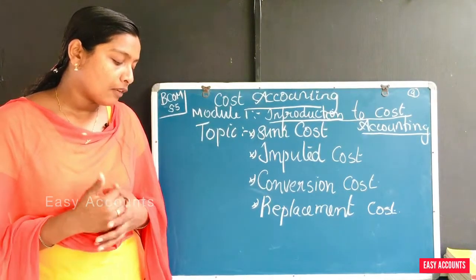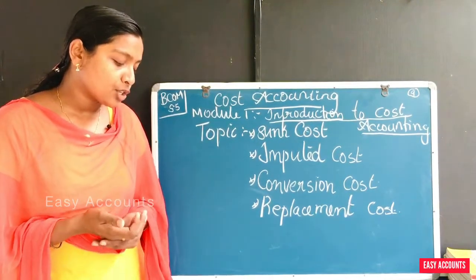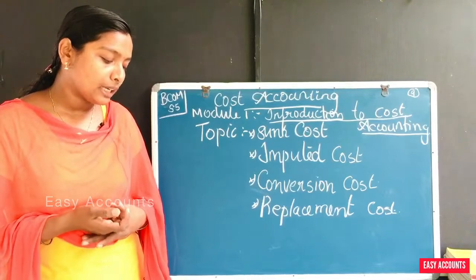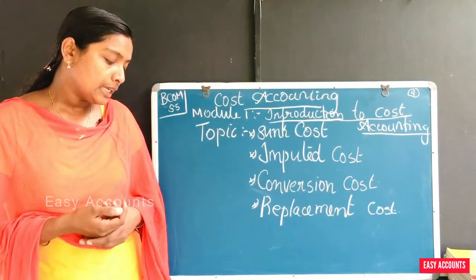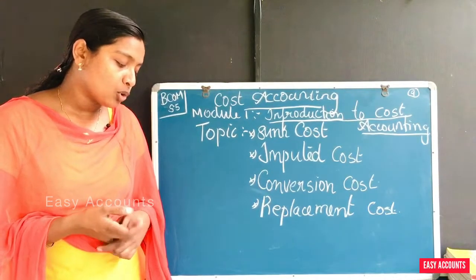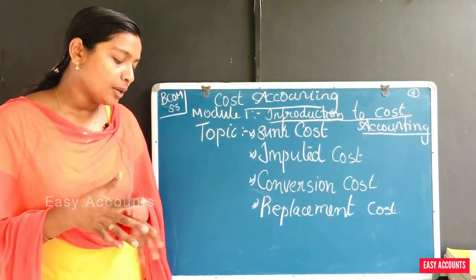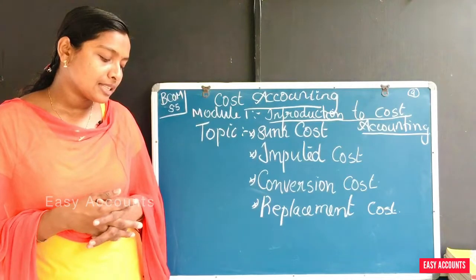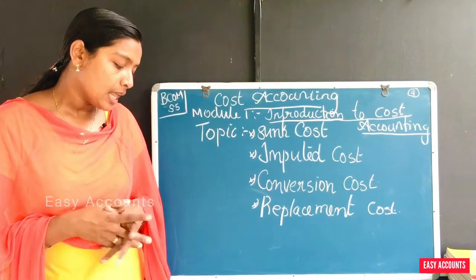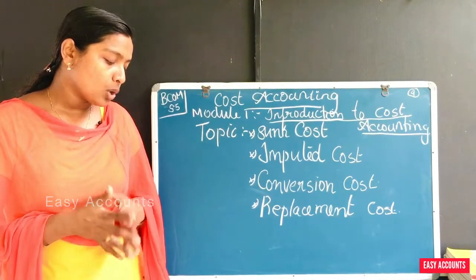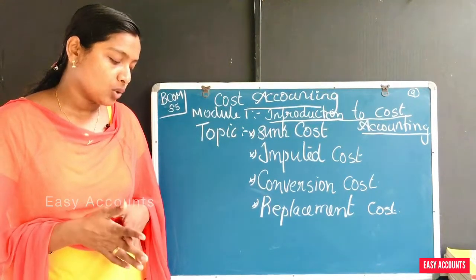Sometimes a plant may have to be replaced by more productive and modern equipment. In such a case, the book value of the old plant minus the salvage value is a loss, and that lost amount is also the sunk cost.